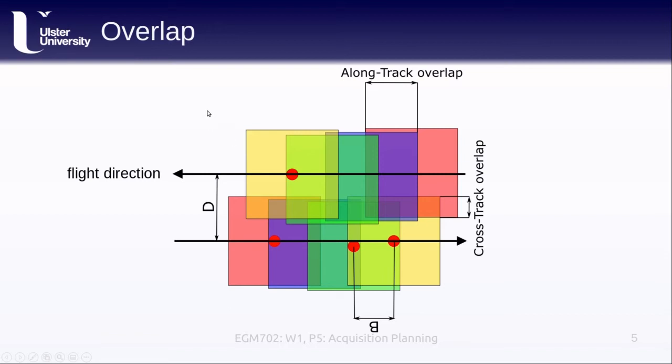When we have our images overlapping, you can see here we have our flight direction taking multiple images like this. We have a number of different ways of thinking about the overlap. The first is something called the along-track overlap, and this is how much the images overlap in the direction of flight.